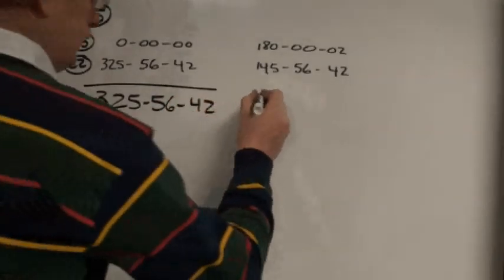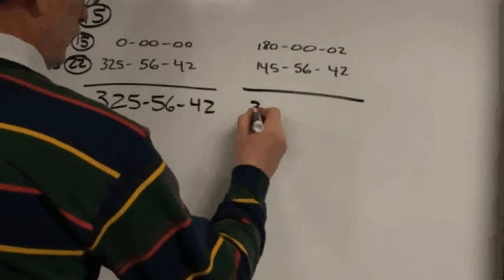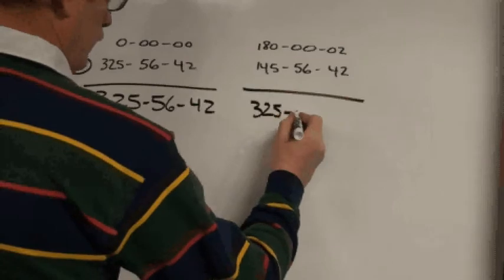On the second face angle, subtracting 180 is the same as adding 180, and you get 325-56-42.